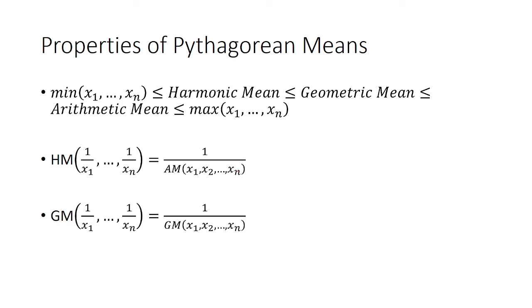Similarly, the geometric mean is its own reciprocal dual. If I take the geometric mean of 1 over x1 to 1 over xn, that's the same as 1 over the geometric mean of x1 up to xn.